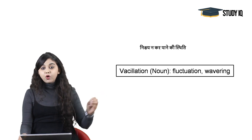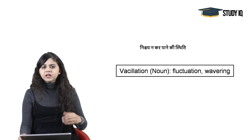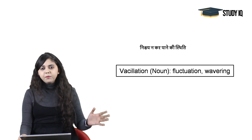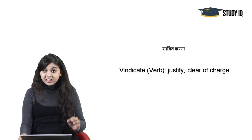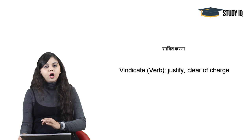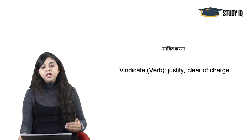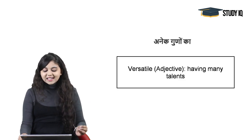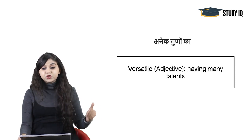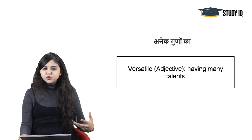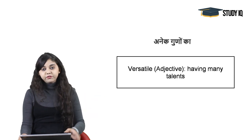Vacillation — ka arth hota hai oscillating, fluctuate karte rehna, waver karte rehna. This noun means not coming to any conclusion because you are always dalmadol. Vindicate — ka arth hai to clear off a charge or to justify; jab aap saabit kar dete hain kisi cheez ko, that is when we use the verb vindicate. Versatile — ka arth hai aneek guno waala, a man of many parts, having many talents — unke liye hum versatile adjective ka prayog karte hain.